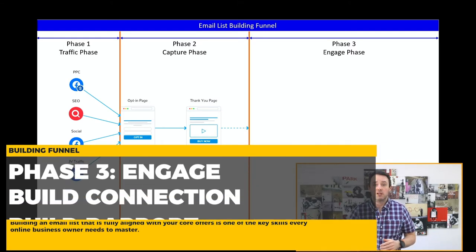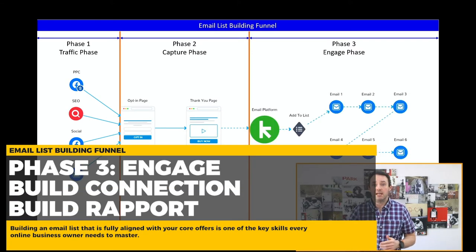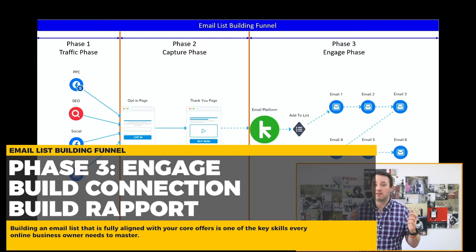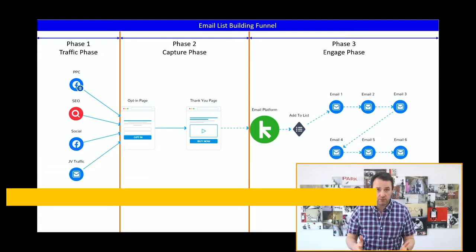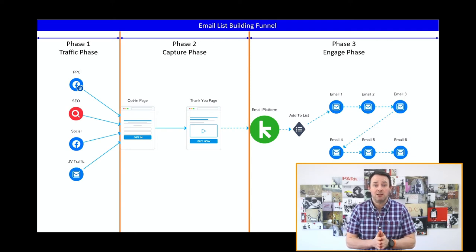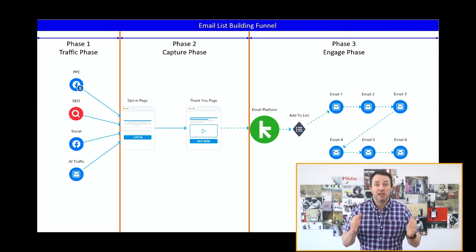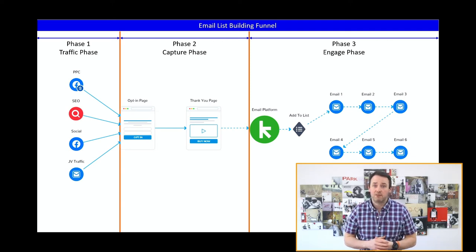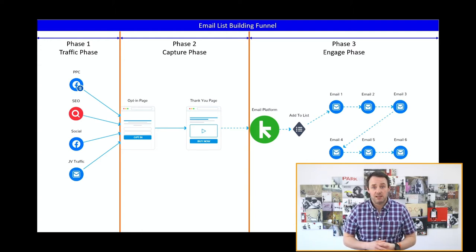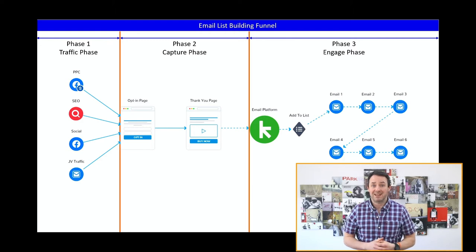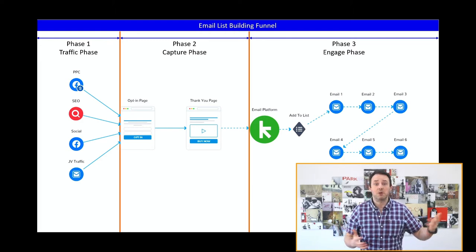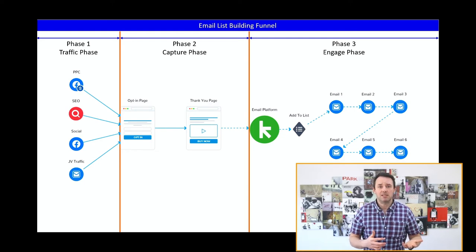Now we're going to move on to phase three, which is the engage phase. And this is a forgotten part of the lead generation funnel. You spend all that time and effort creating your lead magnet, building your landing page, launching your Facebook ad, battling to get your cost per lead down, then somebody opts in and they get an email with a link to download the lead magnet — and that's it. Next thing they get dumped straight into your weekly email campaign. This is such a costly mistake.